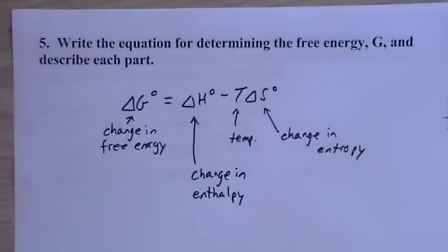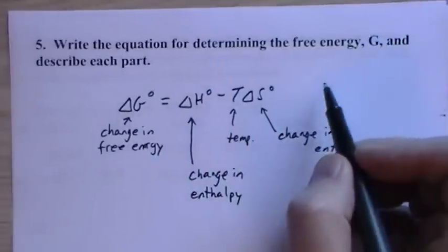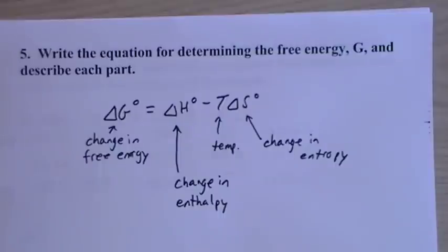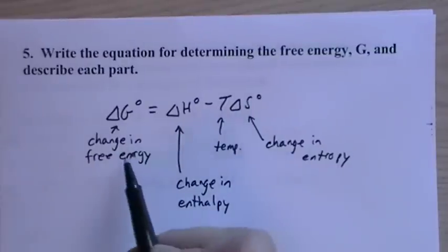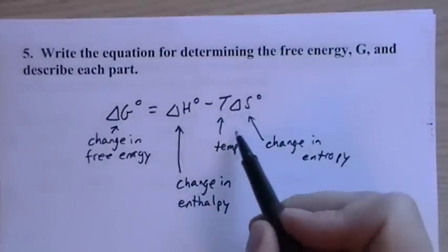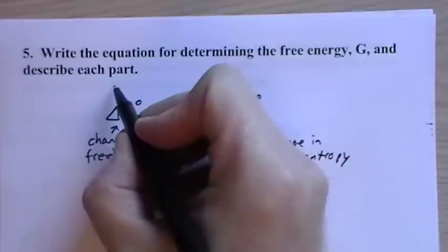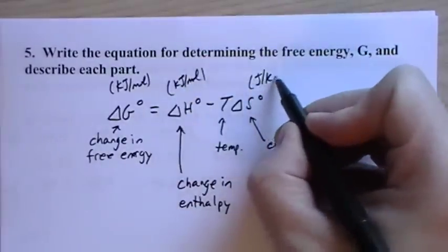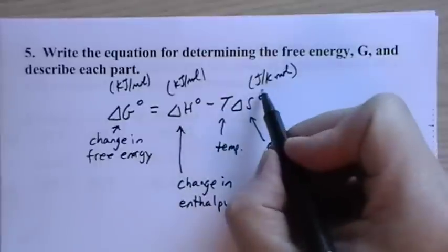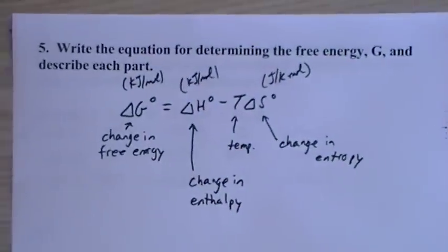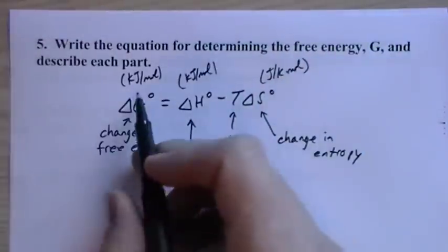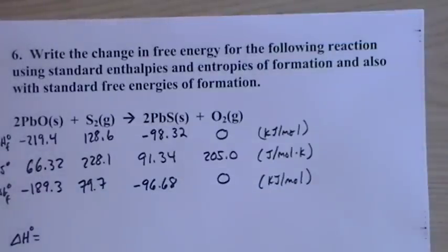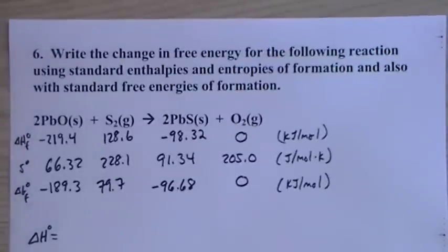The equation for Gibbs free energy change is: ΔG° = ΔH° − TΔS°. The change in free energy equals the change in enthalpy minus temperature times the change in entropy. ΔH is typically in kilojoules per mole while ΔS is in joules per Kelvin per mole, so you must convert units — usually to joules — before combining them.